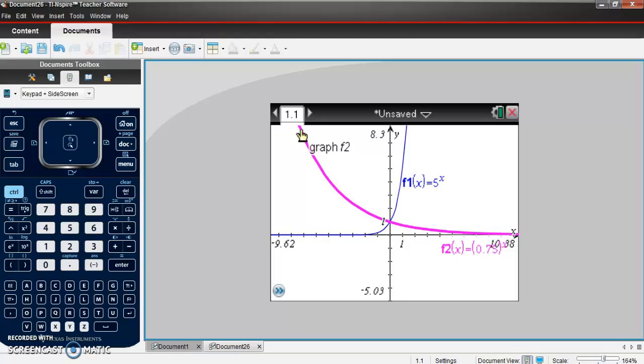Well, as this pink one decreases, it kind of decreases a little bit slower than this one increases. So what you could call that is a horizontal stretch. So the rate at which it changes is spread out farther.